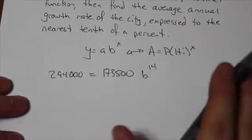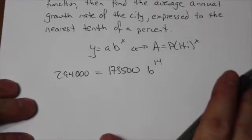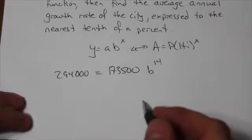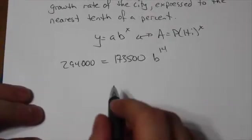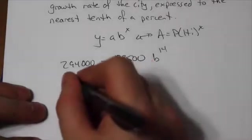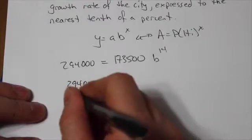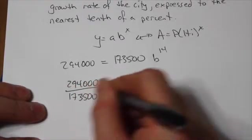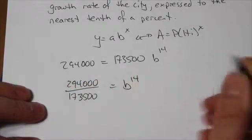Now I think it's pretty clear after a lot of practice with these things that the very first thing you got to do when you get a question like this is you got to divide—you got to isolate the power. So that means 294,000 over 173,500 is b to the 14.